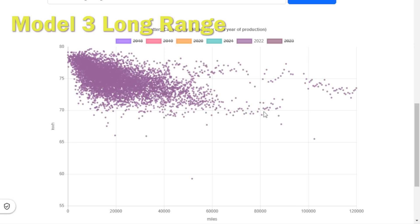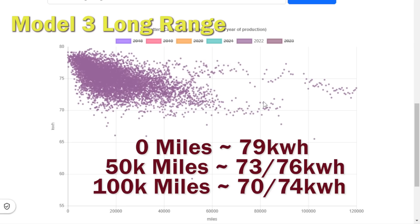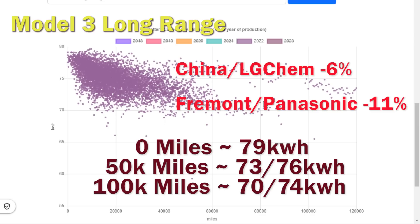What we have however detected looking at this data is there seems to be two different cohorts of batteries, some which have depreciated more than others. Some have dropped to about 73 while others only dropped to 76 kilowatt hours, and by 100,000 miles is down to 70 and 74. When we go and start looking at the models and where they've been built, it seems that the China built LG Chem batteries have only dropped about 6 percent, whereas the Fremont Panasonic batteries are down by 11 percent. We find that quite a significant variation and certainly something that deserves more looking into.